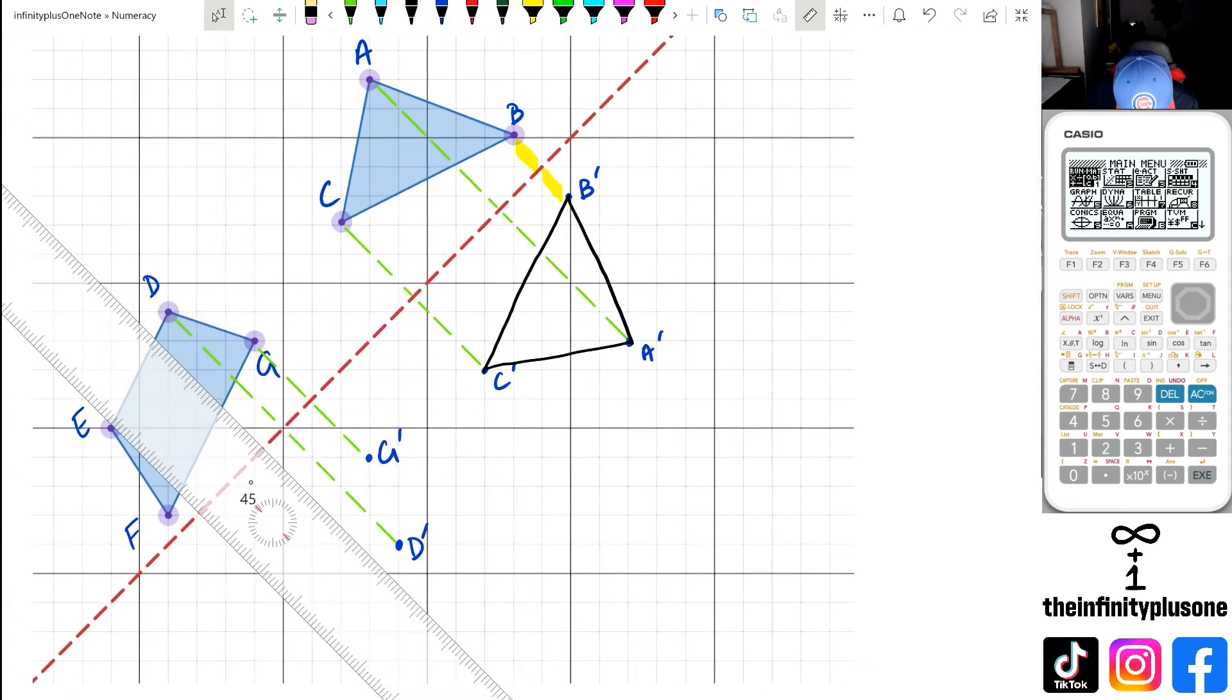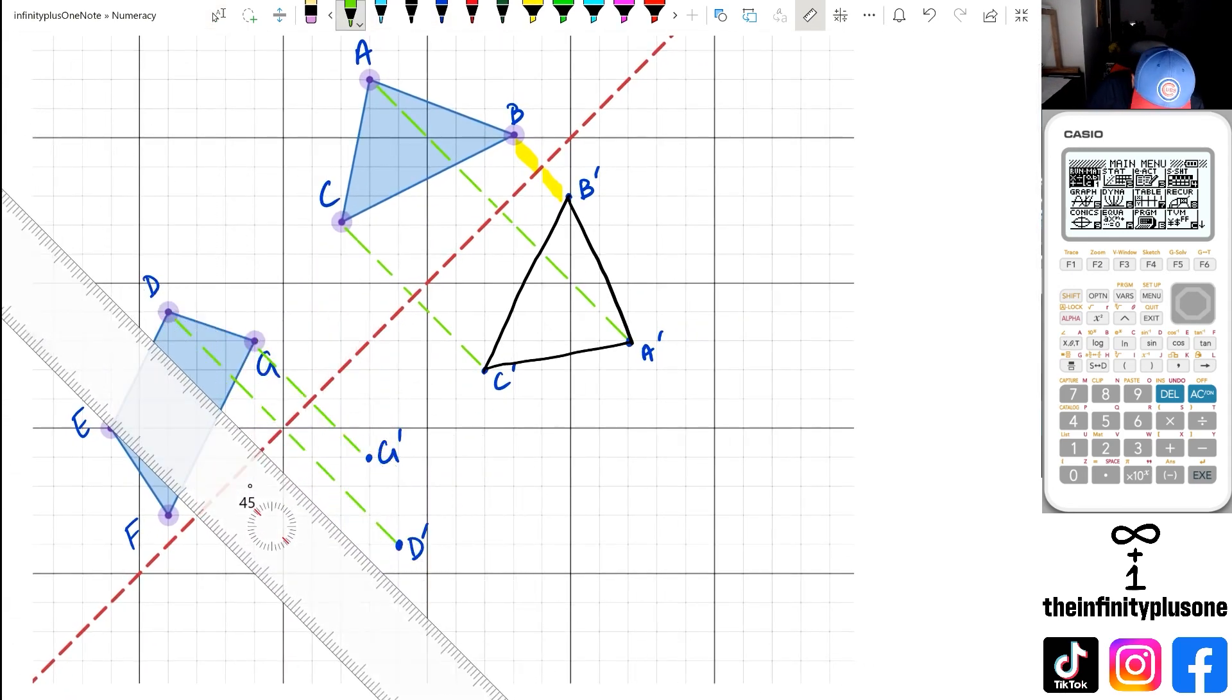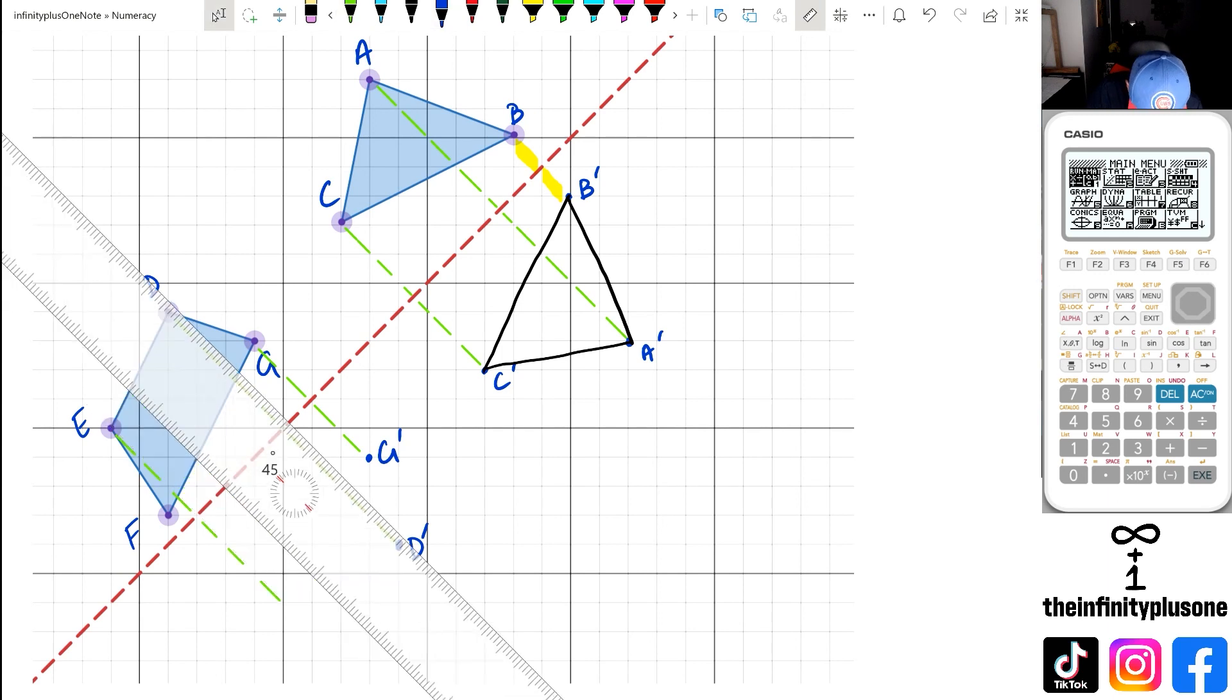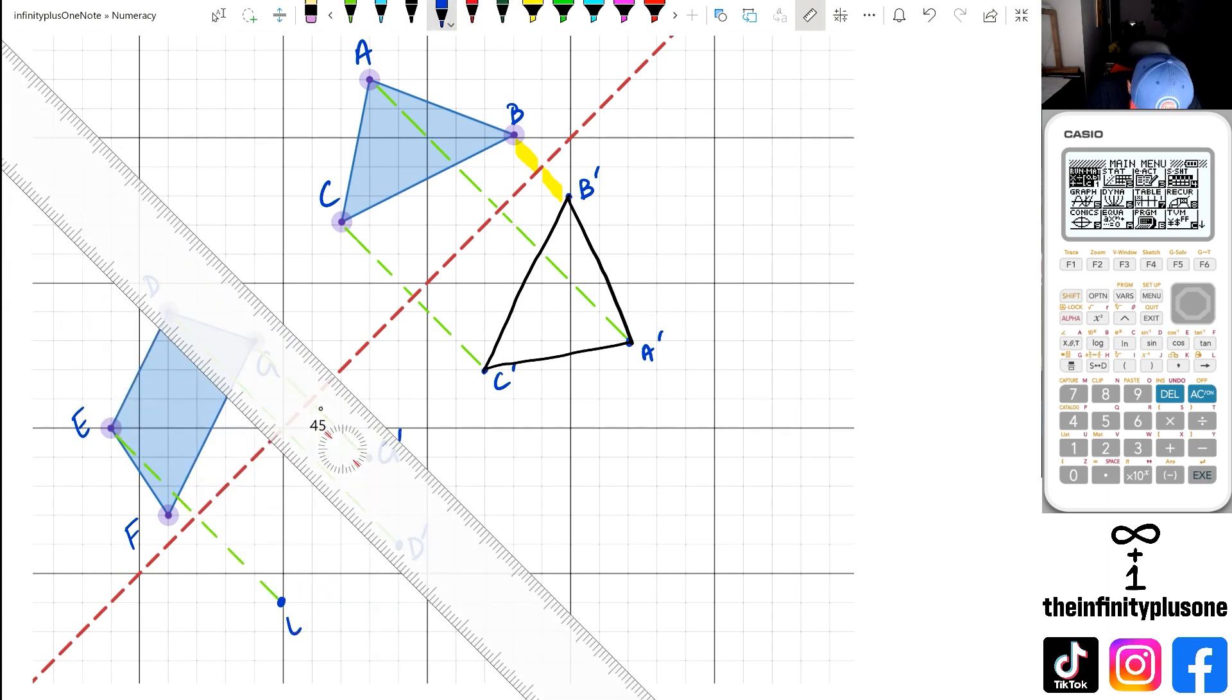Then I want to have a look at E. And if I look at E, I've got one, two, three, one, two, three. So E is going to be right there.